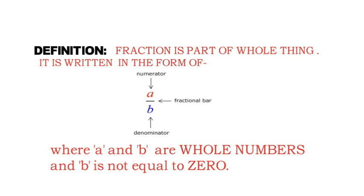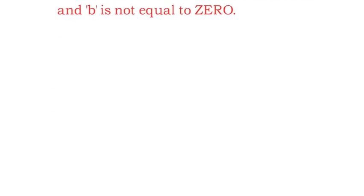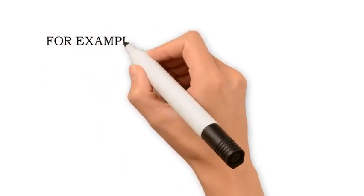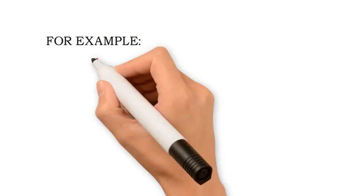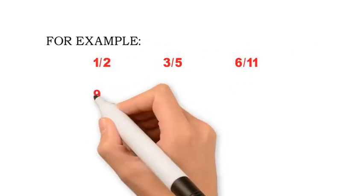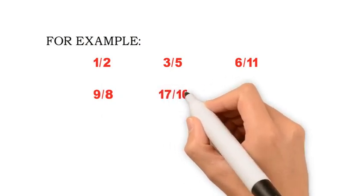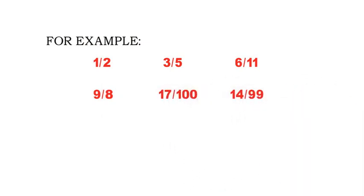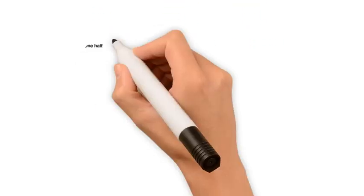Remember that the denominator is not equal to 0. For example: 1 upon 2, 3 upon 5, 6 upon 11, 9 upon 8, 17 upon 100, 14 upon 99 — these are all examples of fractions.